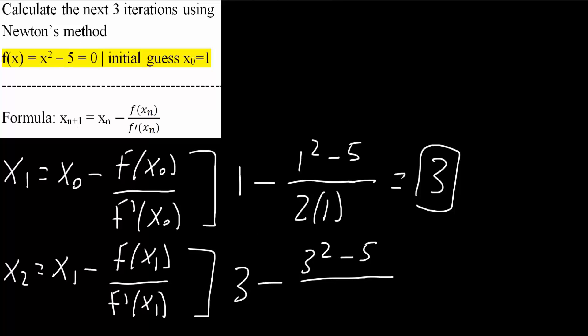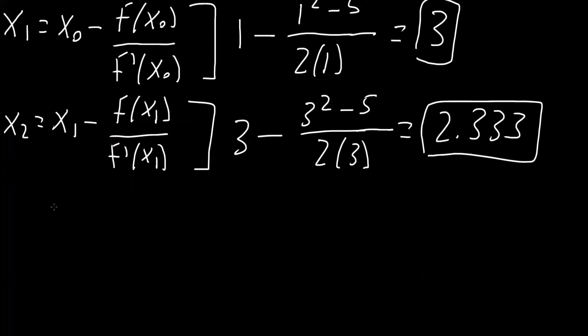I have 2x because the derivative like this, so it's 2x, x is 3. So 2 divided by 3. And this right here would equal 2.333. We can box in this answer. And now we will do x₃.